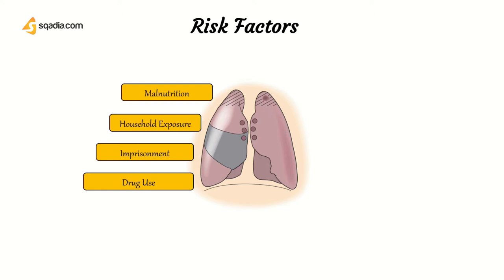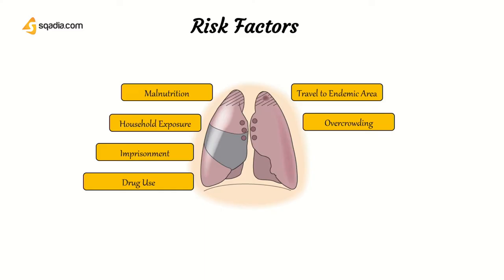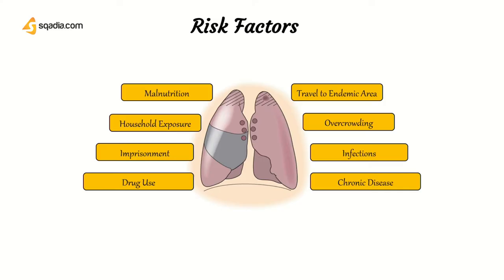In an area where tuberculosis is endemic — meaning a local area affected by a particular disease — when you travel to such an area there is a great chance you can acquire tuberculosis. Overcrowding and infections are additional risk factors. When a person is chronically ill or immunosuppressed, there is a large chance they can acquire tuberculosis.